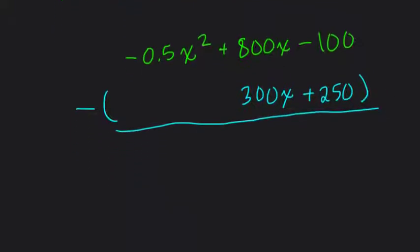So now we subtract. So first of all, we have negative 0.5x squared minus, while there's no corresponding value, so it's just negative 0.5x squared. Then we have 800 minus 300x, which is positive 500x.